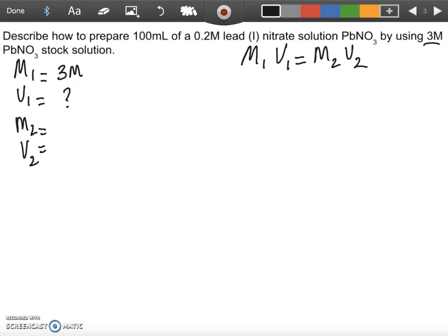Okay, now for the new solution or the solution we're trying to make, it says describe how to prepare 100 milliliters of a 0.2 molar solution. That means we're trying to make 100 milliliters and the concentration needs to be 0.2 moles per liter or 0.2 molar.